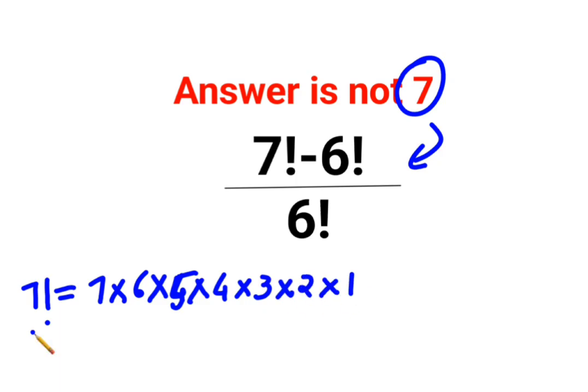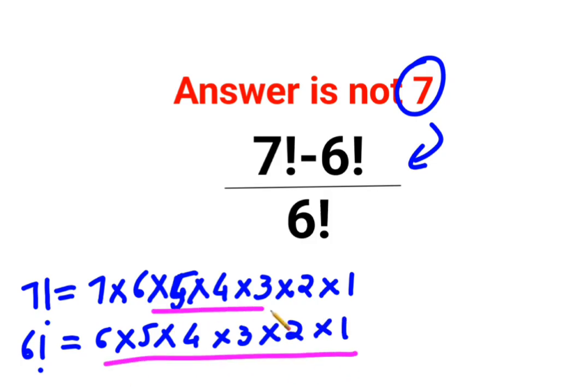Okay, so I can say for 6 factorial also it would be 6 multiplied by 5 multiplied by 4 multiplied by 3 multiplied by 2 multiplied by 1. Now if you look closely, this and this is absolutely same. So I can say 7 factorial can be written as 7 into 6 factorial.